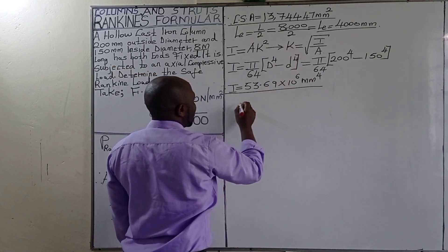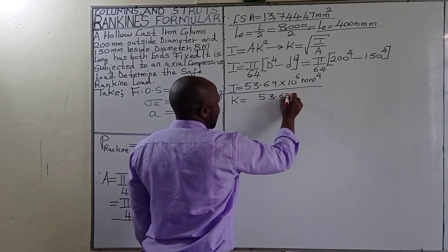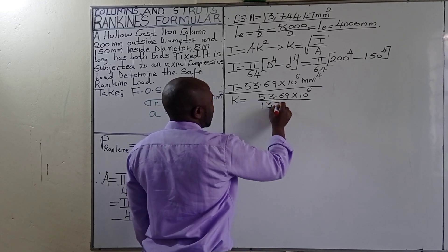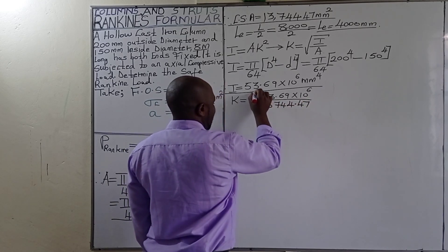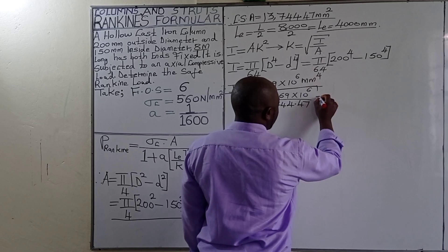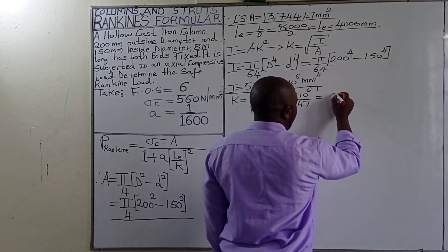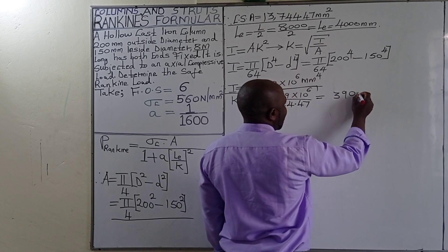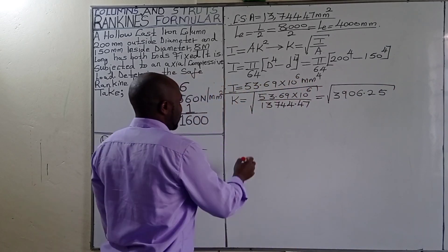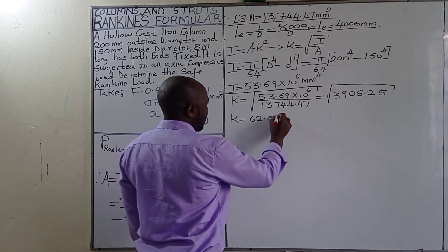Therefore, the least radius of gyration k equals the square root of (53.69 × 10⁶ divided by 13,744.47). Dividing gives 3,906.25, and the square root of 3,906.25 is 62.5 millimeters.